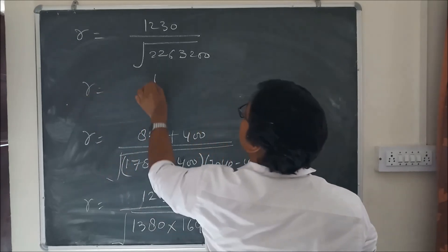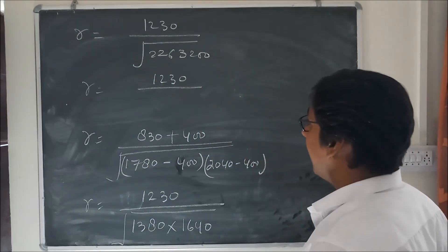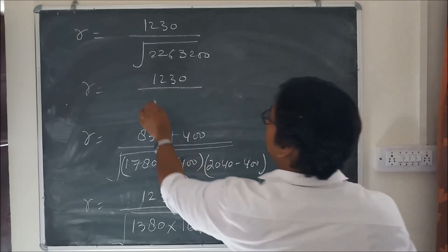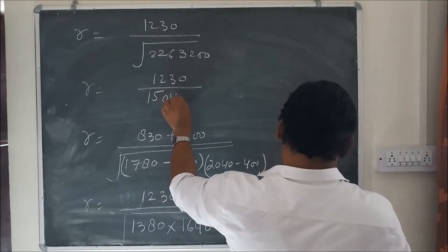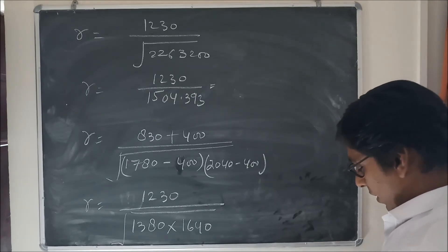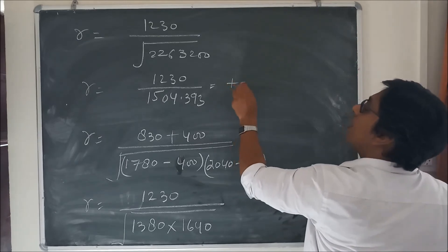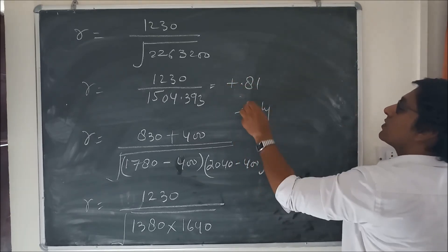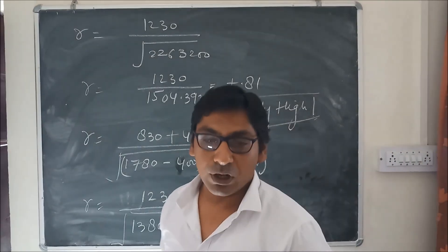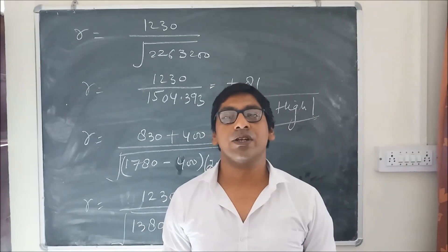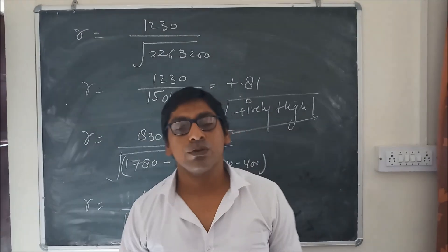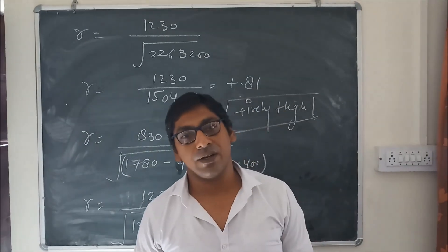So r equals 1230 divided by the square root of 2,263,200, which equals 1230 divided by 1504.39, giving r approximately equal to 0.81. The relation is positive and the degree of correlation is very high. This is the solution for the calculation of Carl Pearson coefficient of correlation by shortcut method. Hope you like and understand this method — thank you so much, please don't forget to subscribe to my channel.